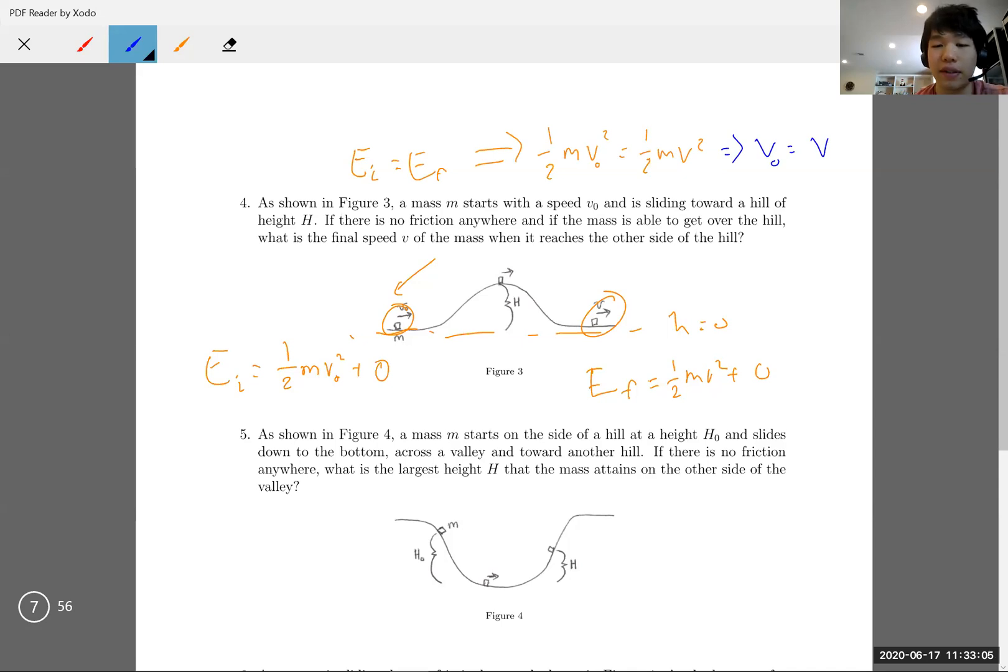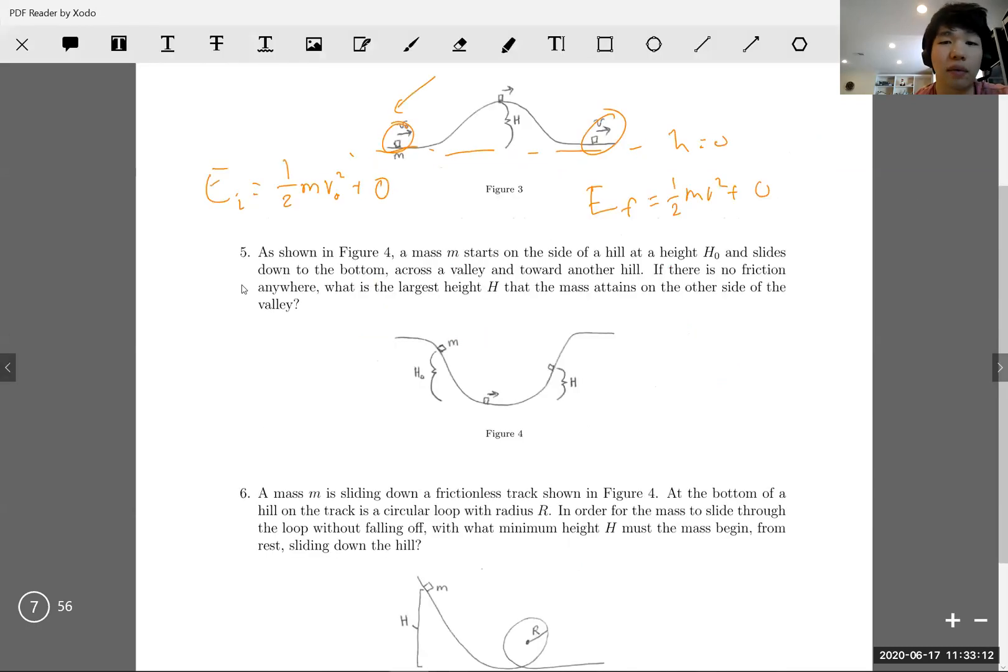Now we look at the next problem. We have a similar situation. A mass m starts at the side of the hill at height h naught and slides to the bottom. There's no friction anywhere. What's the largest height that the mass can attain on the other side? The largest height will be where v equals zero when it reaches its maximum height, because it's going to stop moving and start turning around. Now let's look at energy conservation.